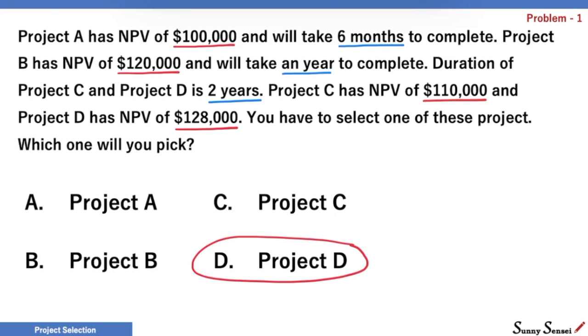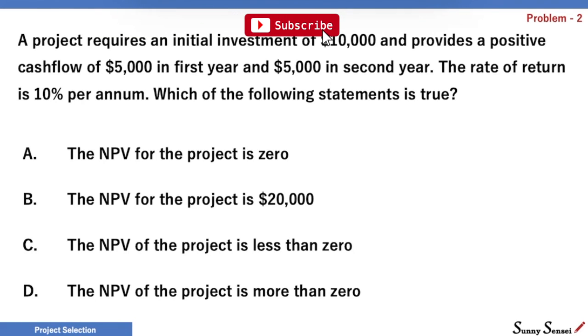Let's move to our second problem. A project requires an initial investment of $10,000 and provides a positive cash flow of $5,000 in the first year and $5,000 in second year. The rate of return for this project is 10% per annum. Which of the following statements is true?